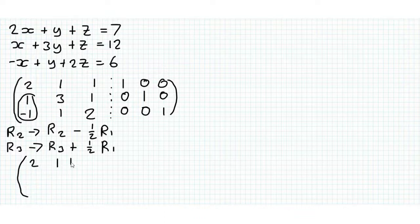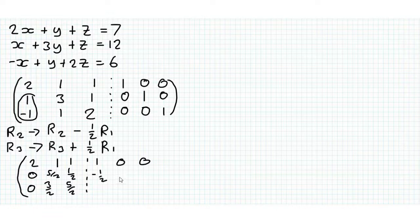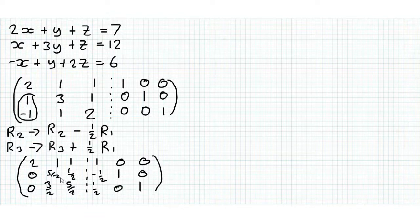These row operations give us: the top row remains unchanged, 2, 1, 1, and we get 0, 0 as we wanted. It comes out as 5 over 2, 1 half, 3 over 2, 5 over 2, minus 1 half, 1, 0, 1 half, 0, 1. And the key is, whatever you do, you have to loop all across on both sides of the augmented matrix. This is really just like one matrix.